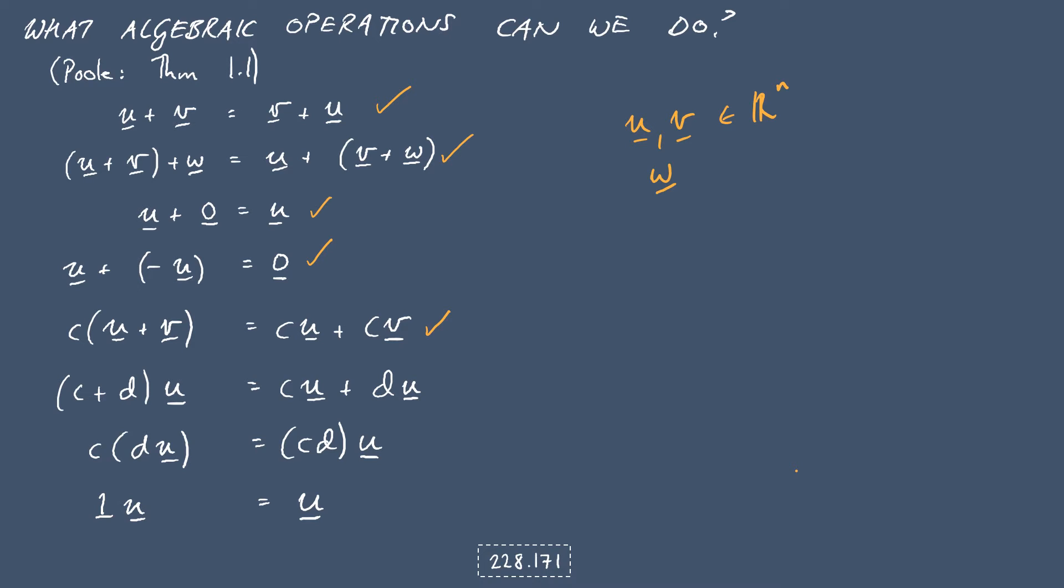Likewise, if we've got two scalars, we can expand that bracket too, and two scalars multiplying a vector u is the same as multiplying the scalars together first, then multiplying the vector u. And finally, if we multiply the vector u by the scalar 1, we get the same vector back.